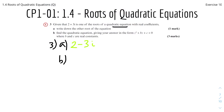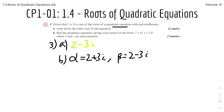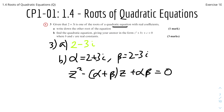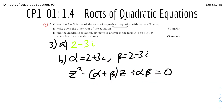Part b: find the quadratic equation and give your answer in the form z squared plus bz plus c equals 0, where b and c are real coefficients. We know alpha equals 2 plus 3i and beta equals 2 minus 3i. Using the rules from last video, the quadratic equation simplifies into z squared minus (alpha plus beta)z plus alpha·beta equals 0, where this is b and this is c.